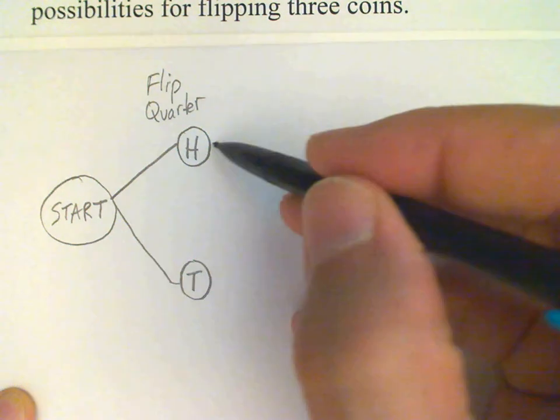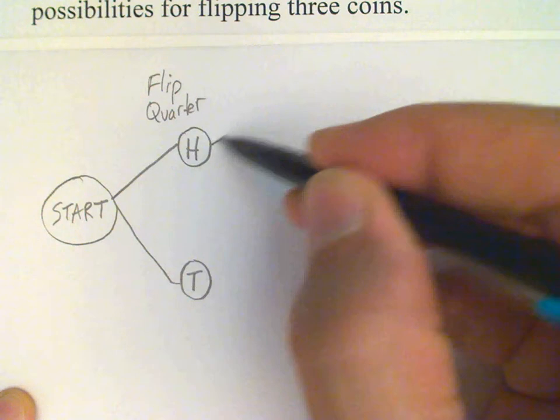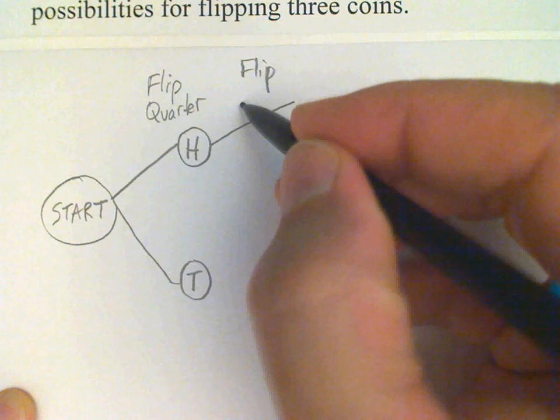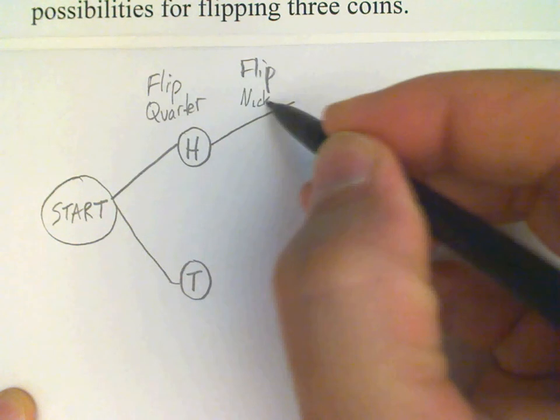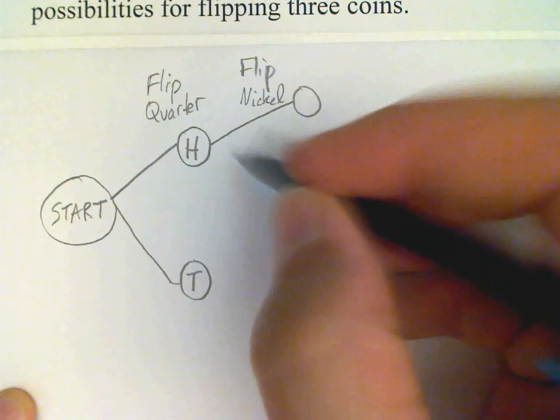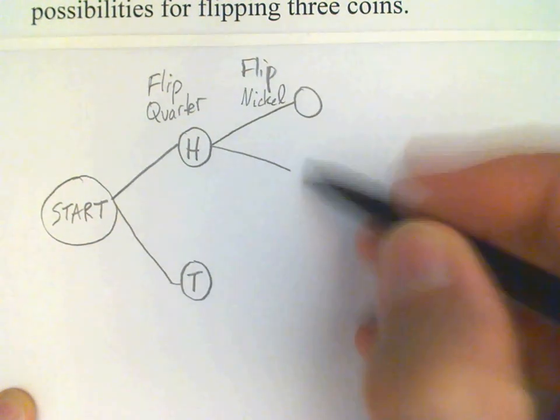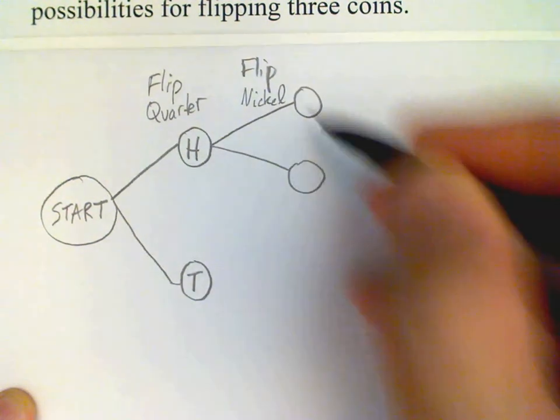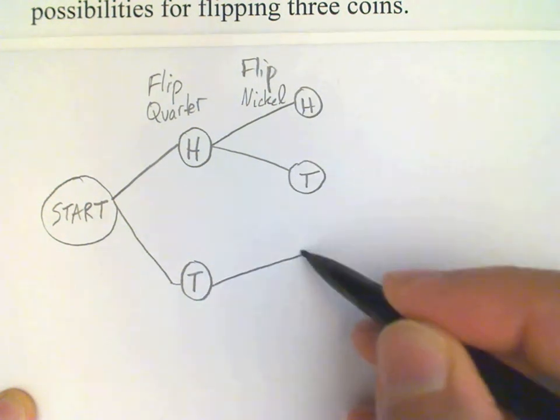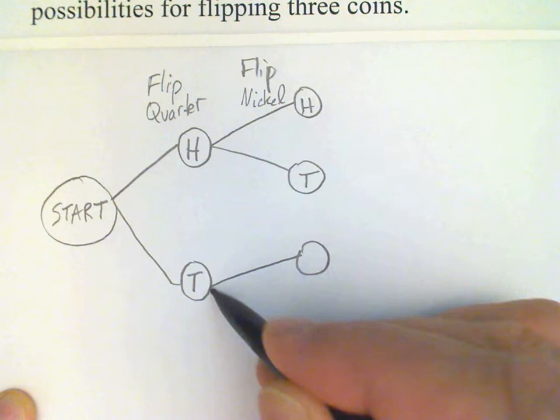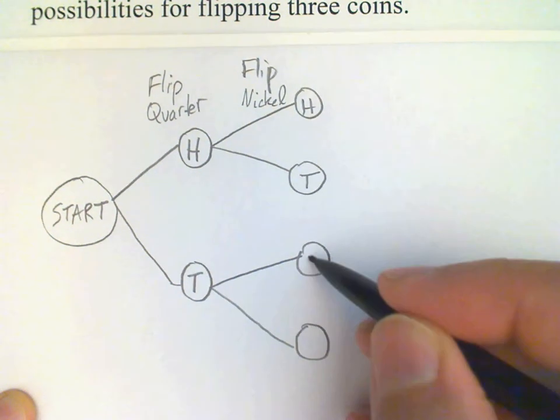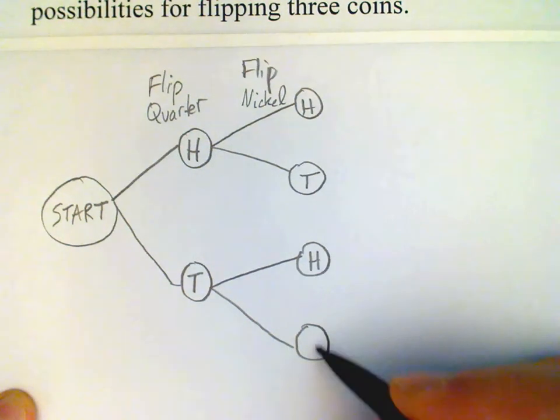Okay, then next we're going to flip the nickel. And of course, for the nickel, there's also two possibilities. Head, tail. And the same possibilities when we have our other possibility for the quarter listed.